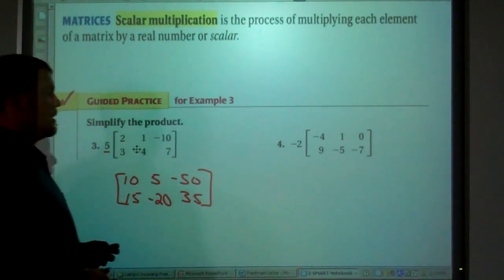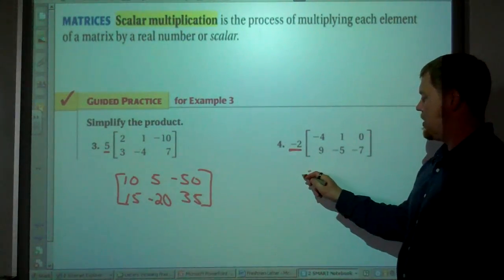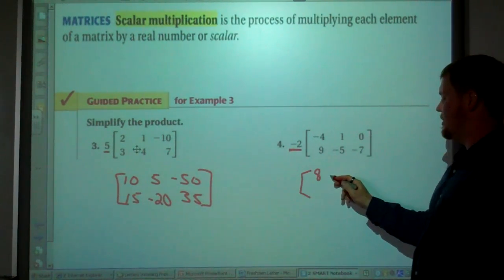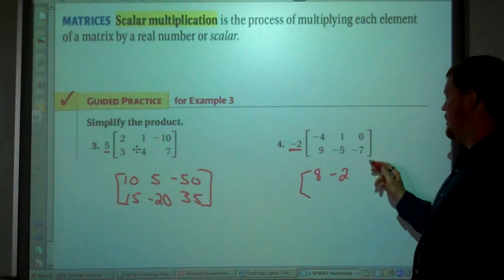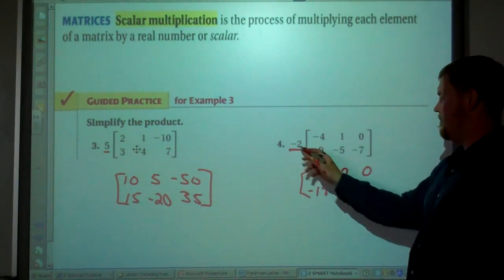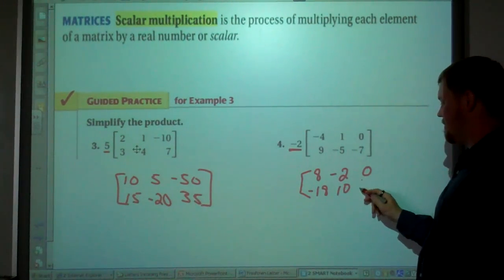Scalar multiplication. Same thing here. Take the negative 2 and multiply it in. Negative 2 times negative 4 is 8. Negative 2 times positive 1 is negative 2. Negative 2 times 0. Negative 2 times 9 is negative 18. Negative 2 times negative 5 is 10. Negative 2 times negative 7 is 14.